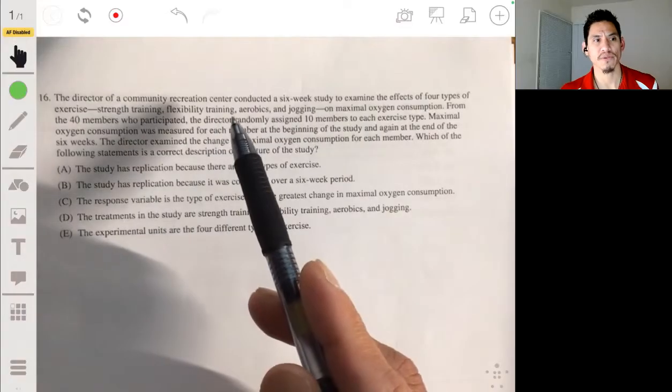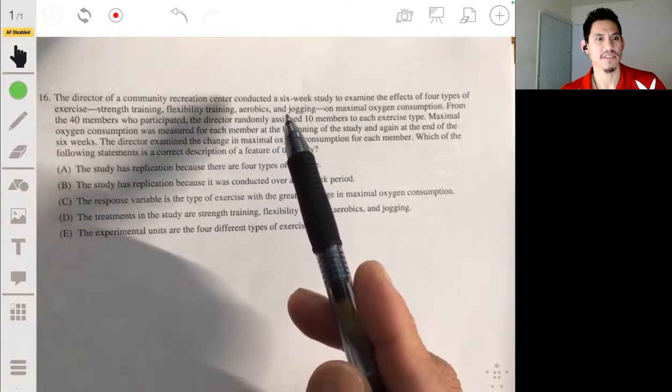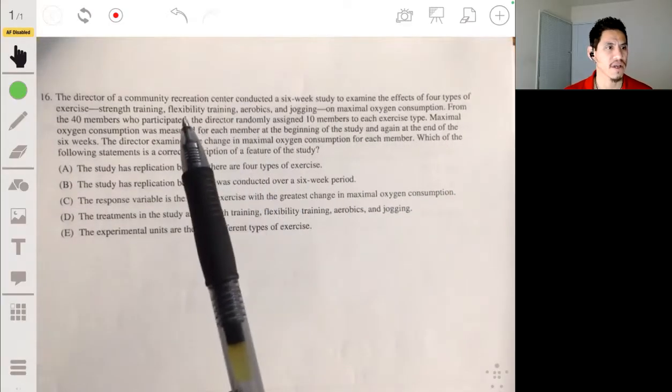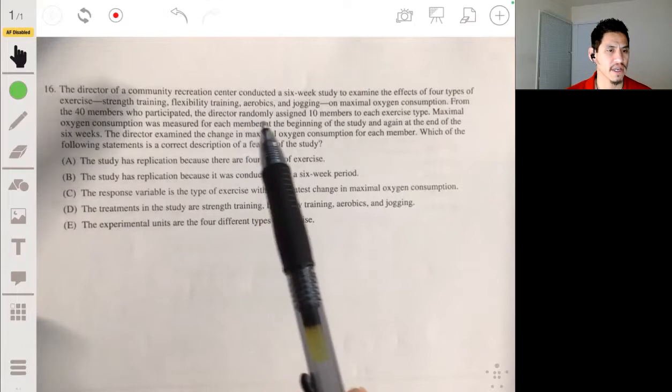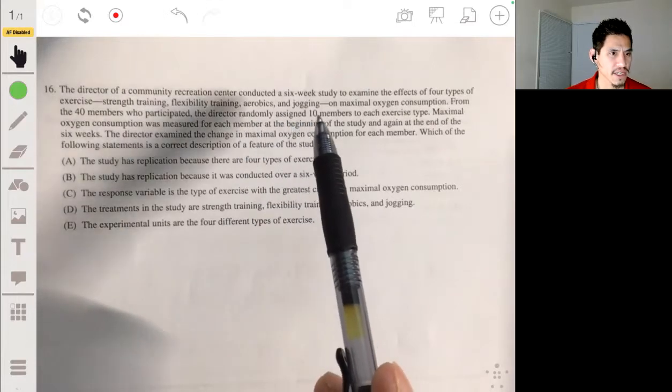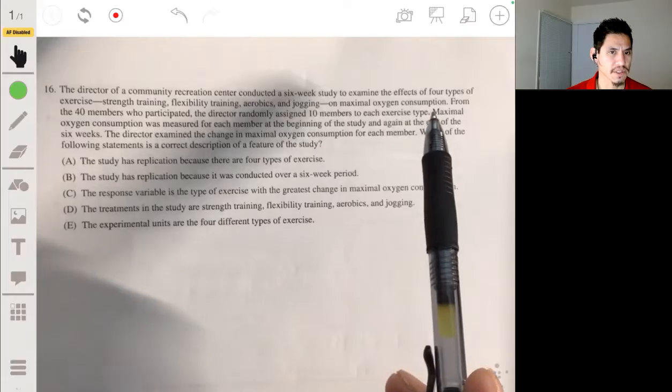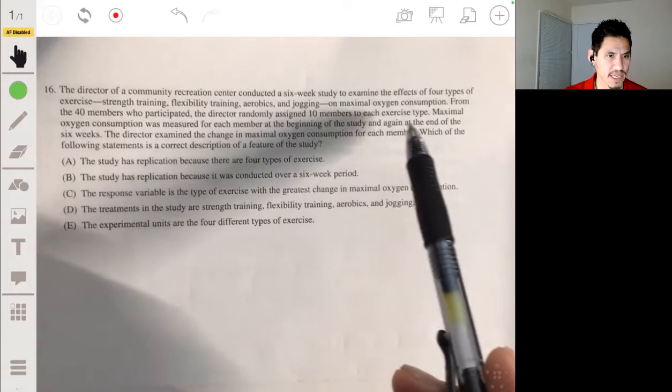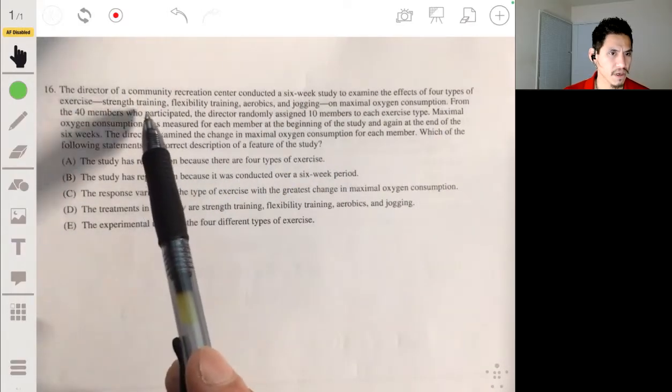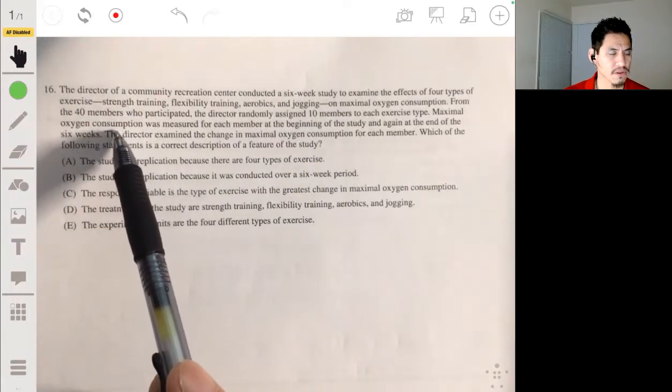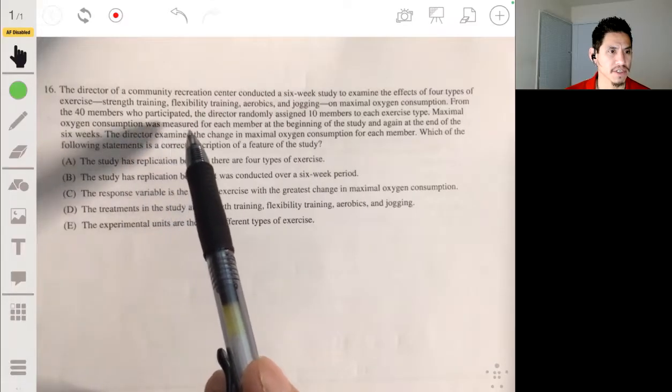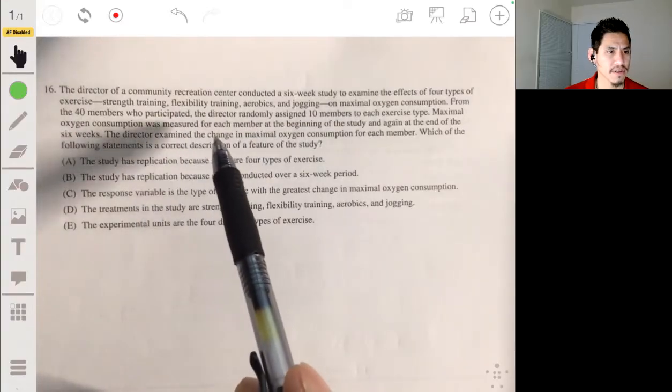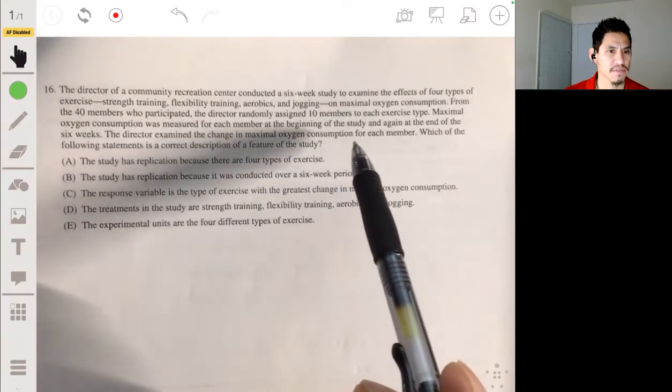Alright, 16. The director of a community recreation center conducted a six-week study to examine the effects of four types of exercise: strength training, flexibility training, aerobics, and jogging on maximal oxygen consumption. From the 40 members who participated, the director randomly assigned 10 members to each exercise type. Maximal oxygen consumption was measured for each member at the beginning of the study and again at the end of those six weeks. The director examined the change in maximal oxygen consumption for each member.